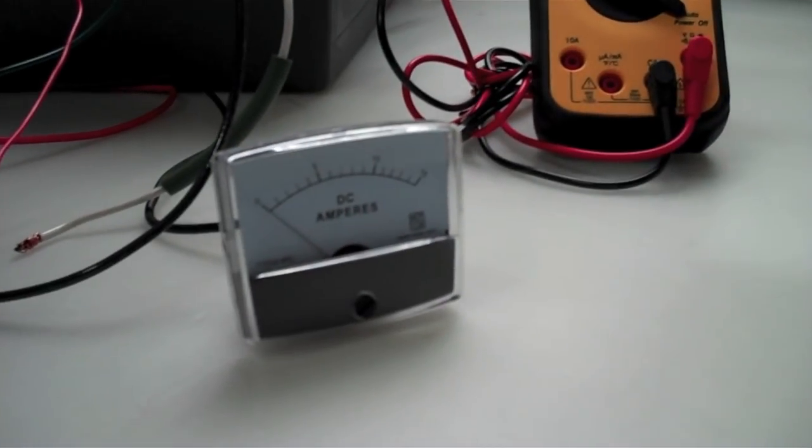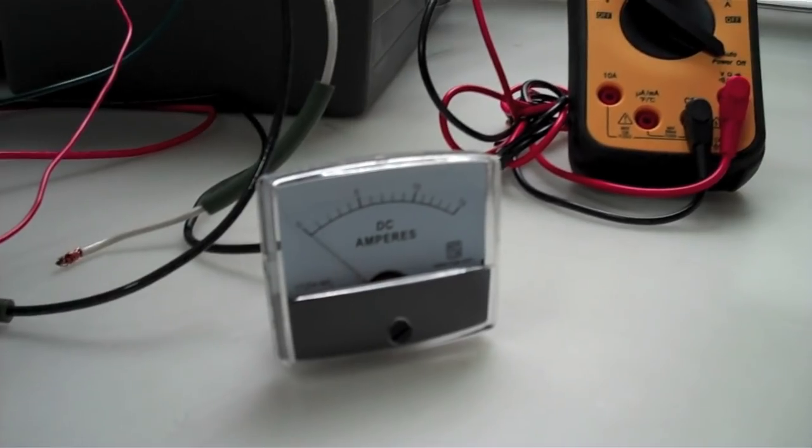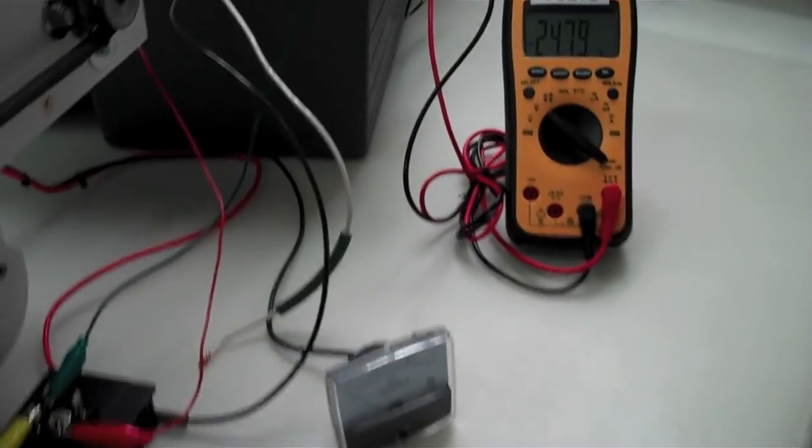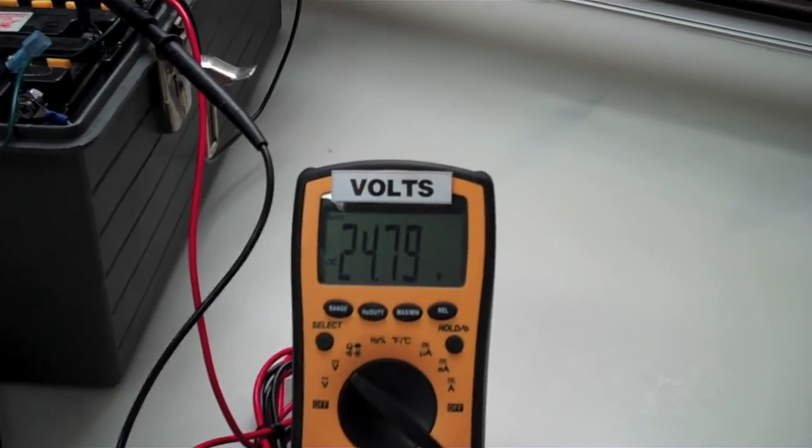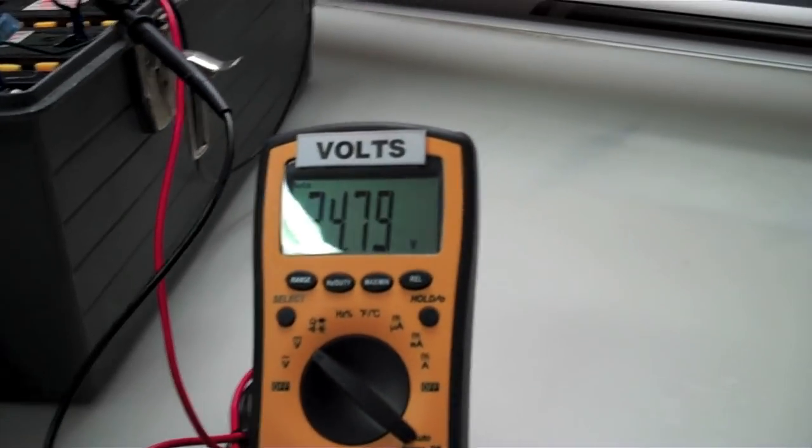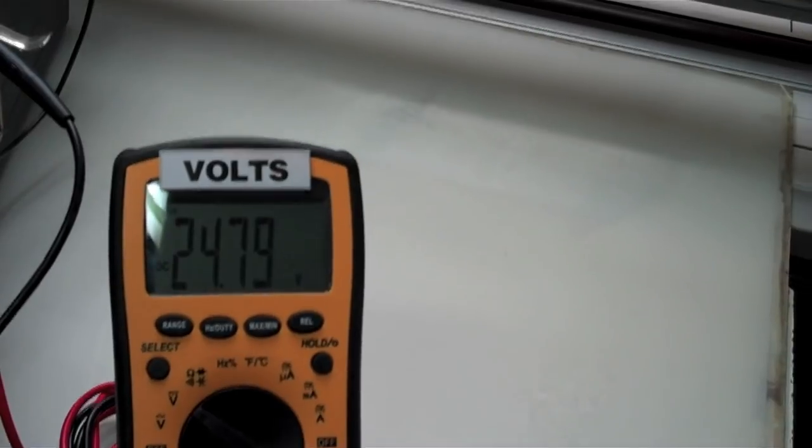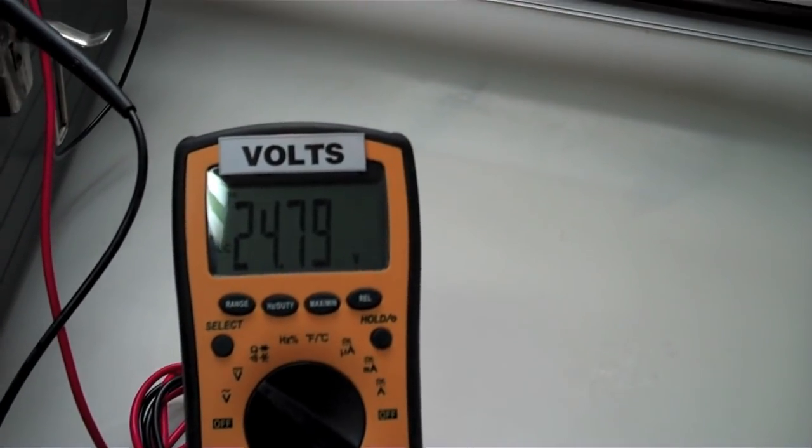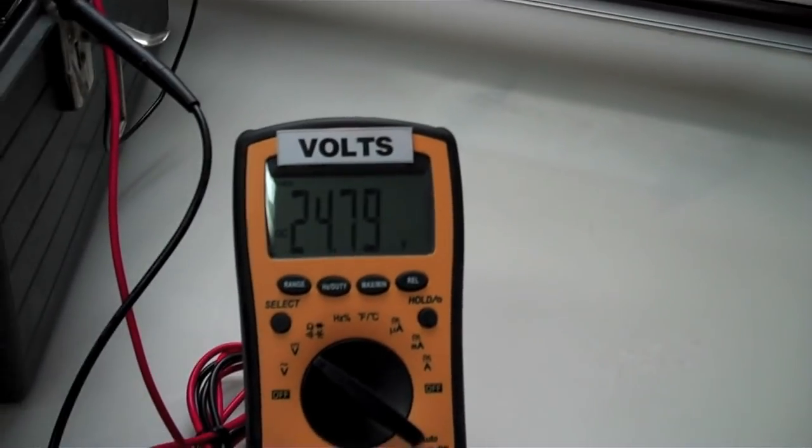So what we want to know is, what we're going to do here is we're just going to read the amps that are being drawn off of the run batteries, the two in series, 24 volt run batteries. And we're going to show here what the voltage is going to rise to in the charging batteries. Can you see that? So right now it's like 24.79 volts.